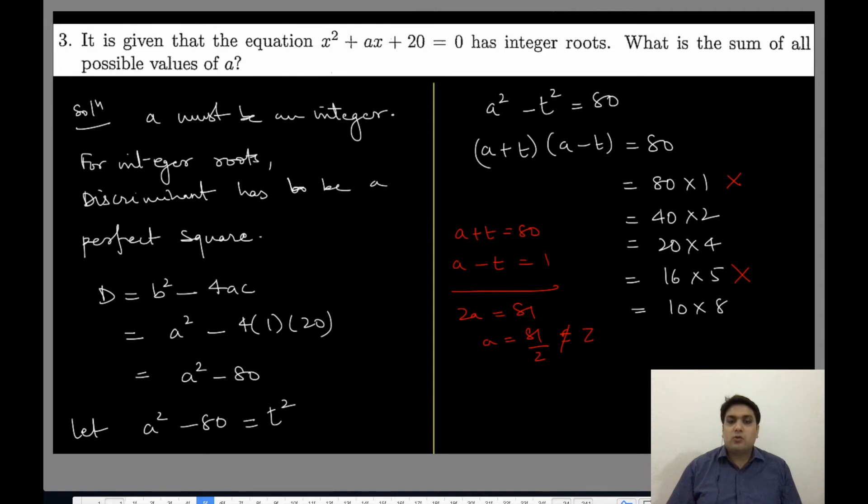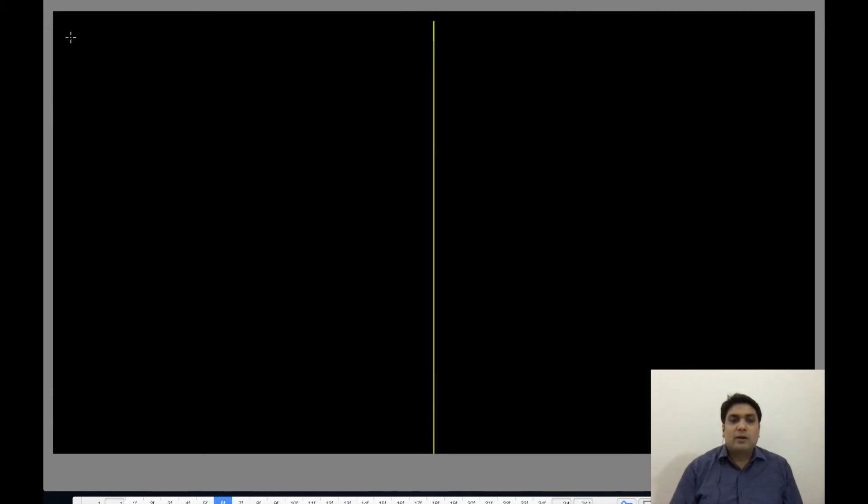If we take the 40×2 case, case 1: a + t equals 40, a - t equals 2. If I add them, 2a equals 42, so a equals 21. This is correct.